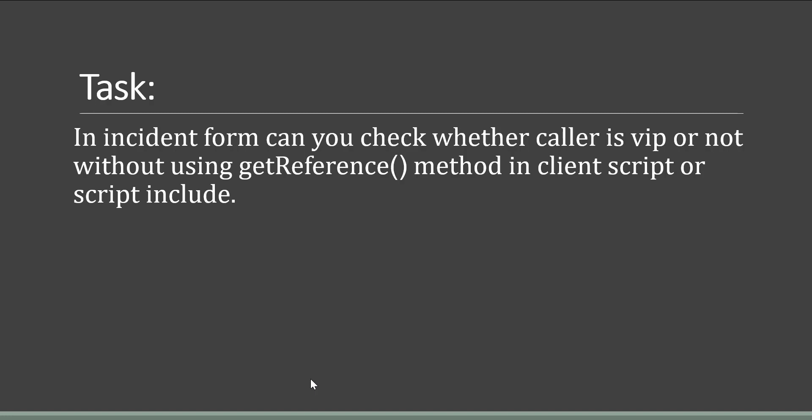Today's task is: in the incident form, can you check whether the caller is VIP or not without using the getReference method in a client script or a script include? In the interview, they first asked what approaches we can use to check whether the caller is VIP or not in the incident form. I said there are two ways: we can use the getReference method, or we can write a script include and call it in the client script. They then asked, if you don't want to use both of those, what other alternatives are available?